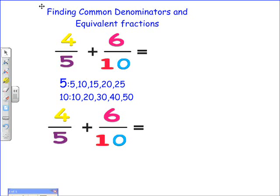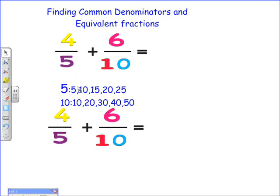So you have to find the least common multiple. The multiples of 5 are 5, 10, 15, 20, and 25. The multiples of 10 are 10, 20, 30, 40, and 50. And the least common multiple is 10.